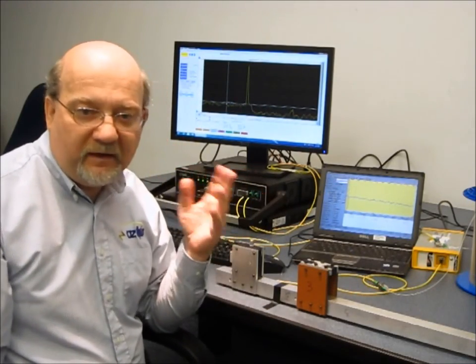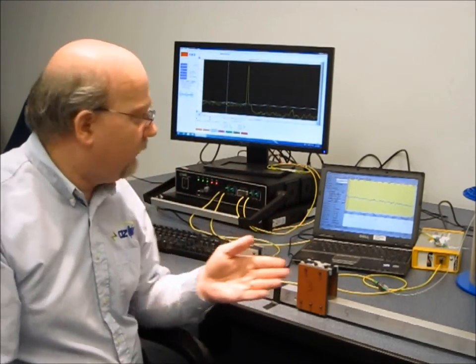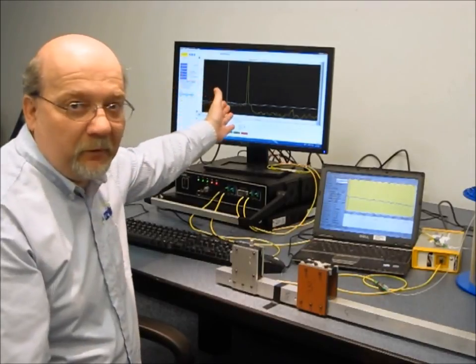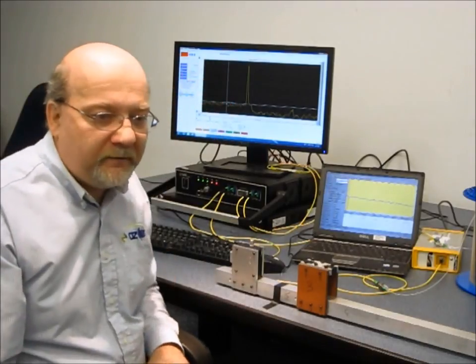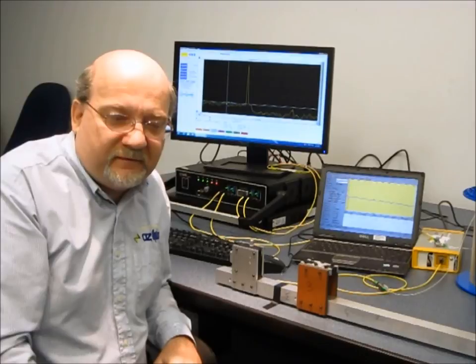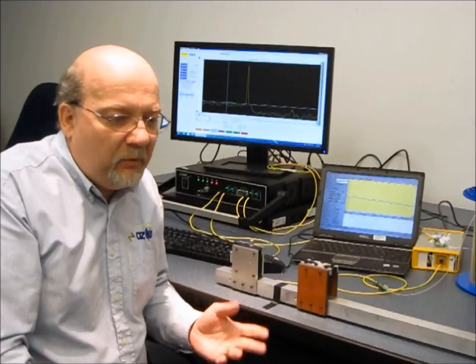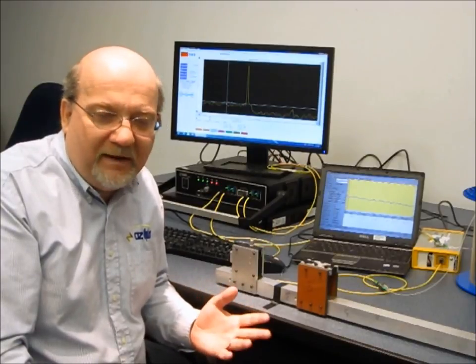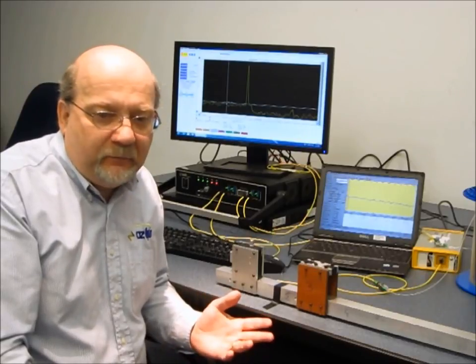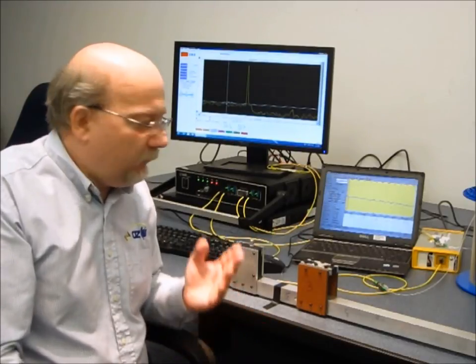So the OTDR is not detecting a strain which was so obviously visible on our Brillouin sensing system. So this clearly shows how the Brillouin sensor is capable of measuring changes of strain on a fiber on orders of magnitude greater than what an OTDR can detect.